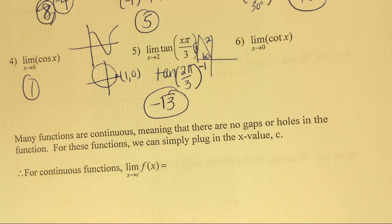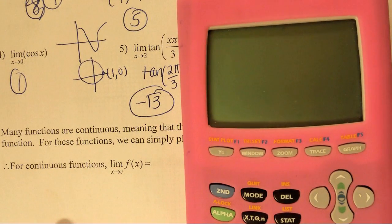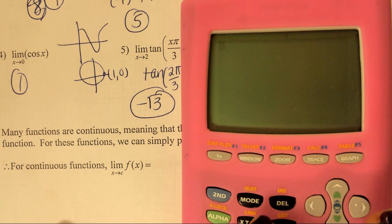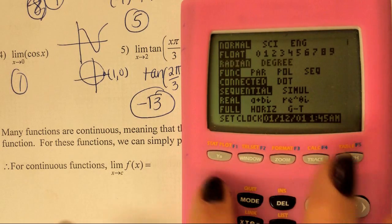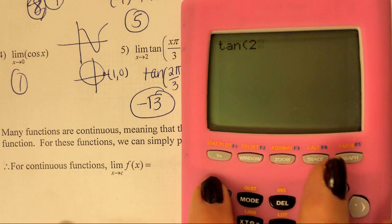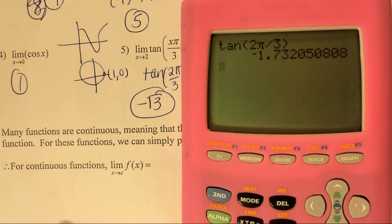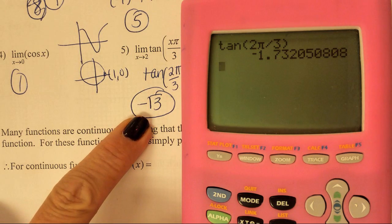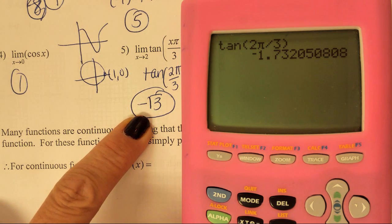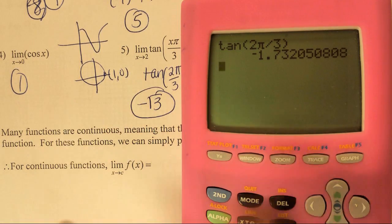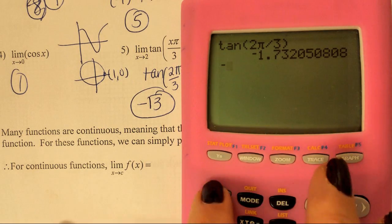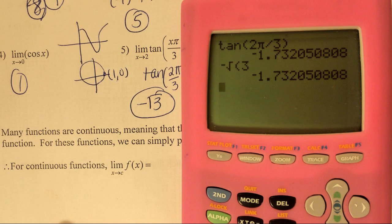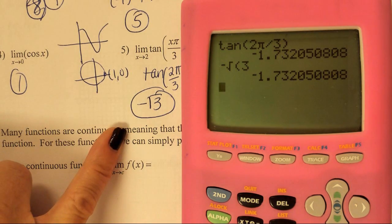Whenever you're finding limits, the directions are always going to say to find the exact limit. Here's what people tend to want to do. They want to just go to their calculator. They check their mode, they have to make sure they're in radians. And they just type in the tangent of 2 pi over 3. And then they put this for their answer. That is not an exact answer. Even if you put negative 1.732050808, that's not exact. This is an irrational number. It's impossible to write it exact in decimal form. I can check this though. Here's what the calculator said the answer should be. So I'm going to see is my negative radical 3 the same as that. And it is.